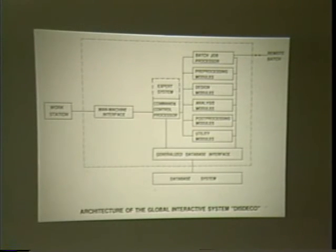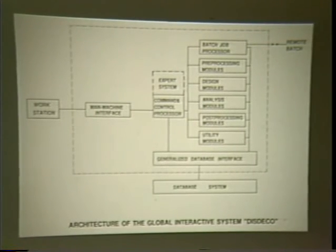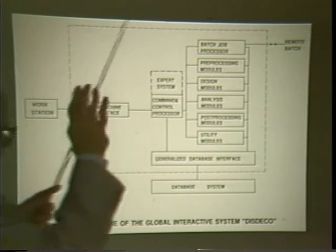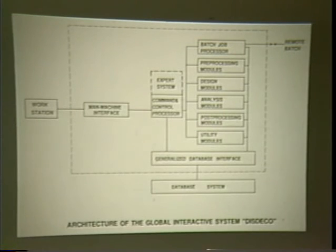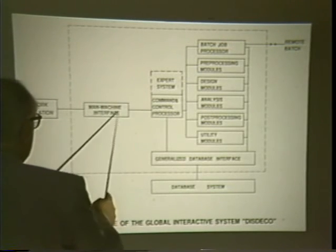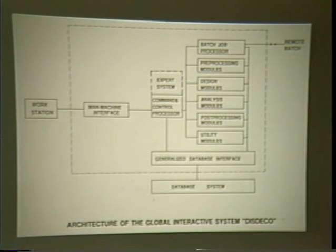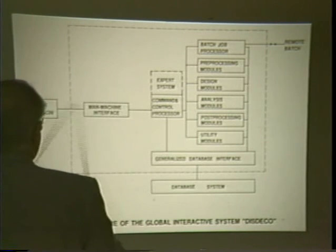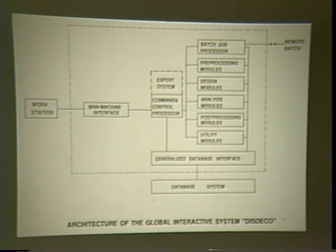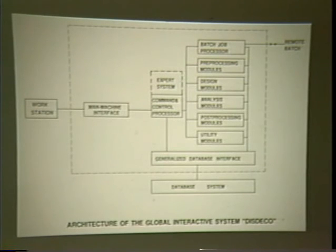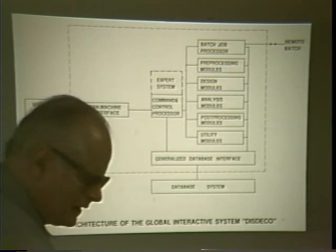The architecture of DISDECO is designed to be transportable — possible to install on a SunSPARCstation, a Silicon Graphics, a Mac, or similar systems. The whole system is encased in an environment where communication to the workstation and to any database being used is handled via interfaces. So if you switch from a SPARCstation to a Silicon Graphics, all you need to do is replace the interface. All the remaining modules that do the actual work sit on the workstation and are written in standard Fortran.